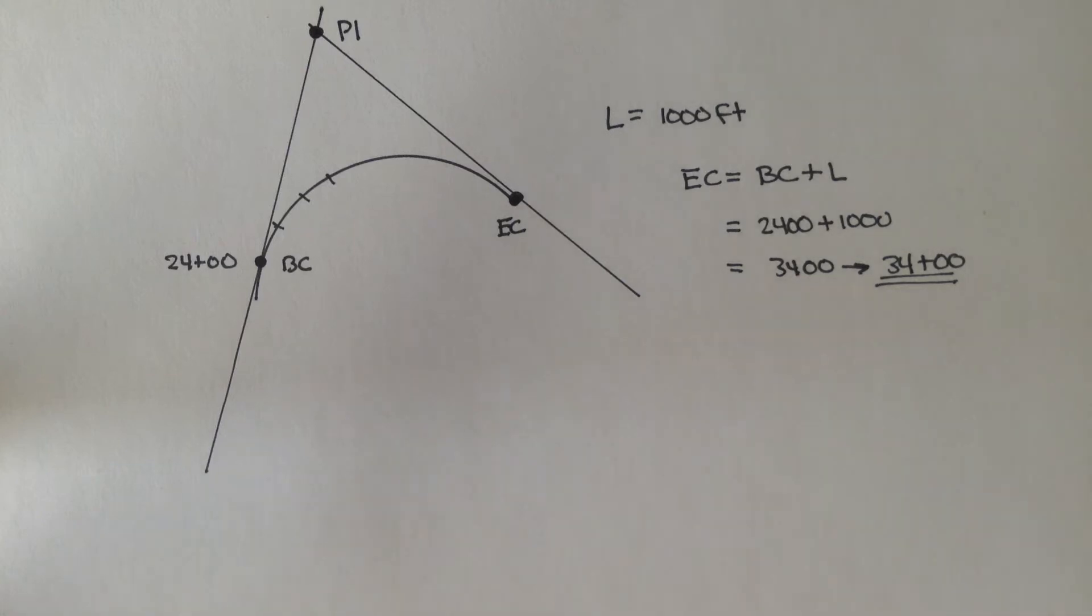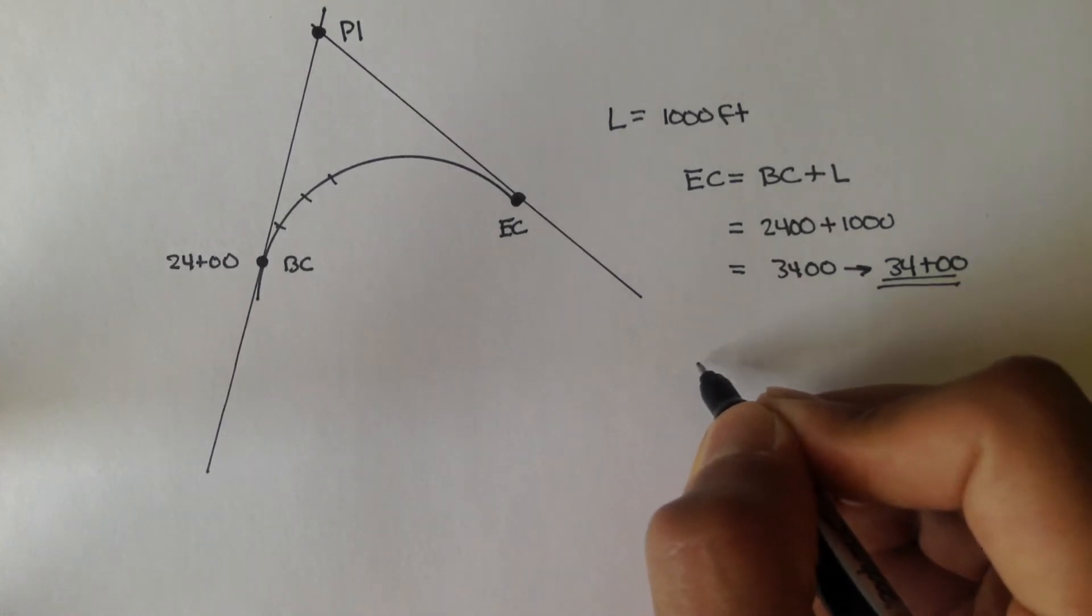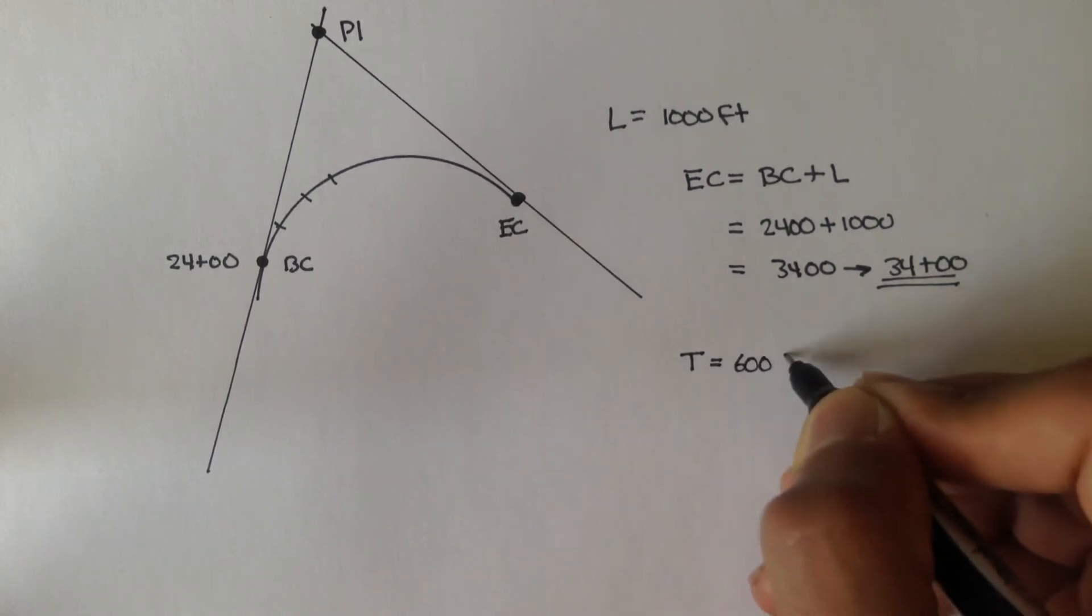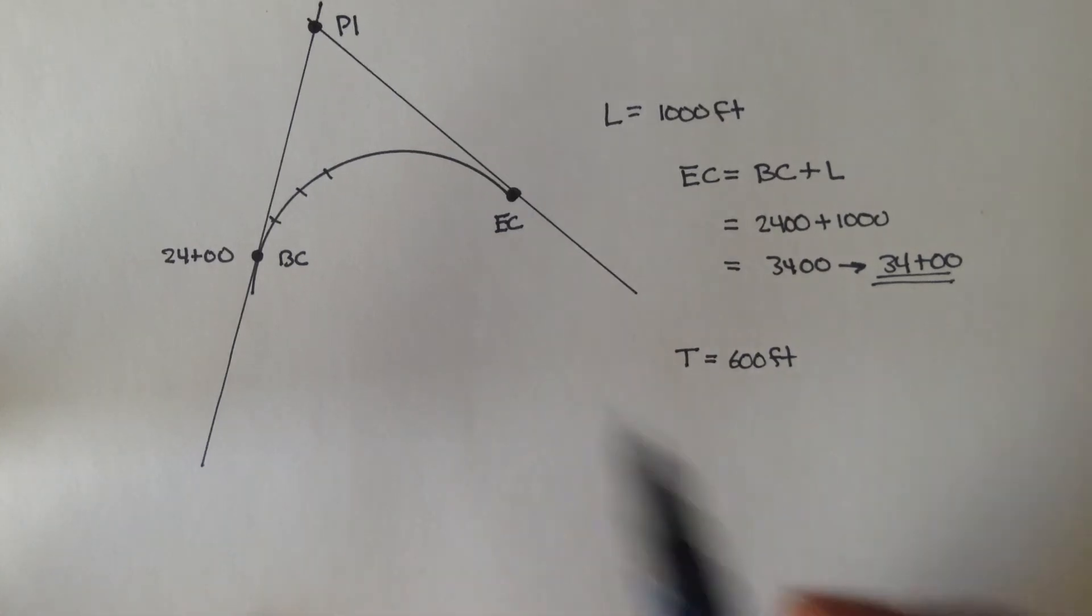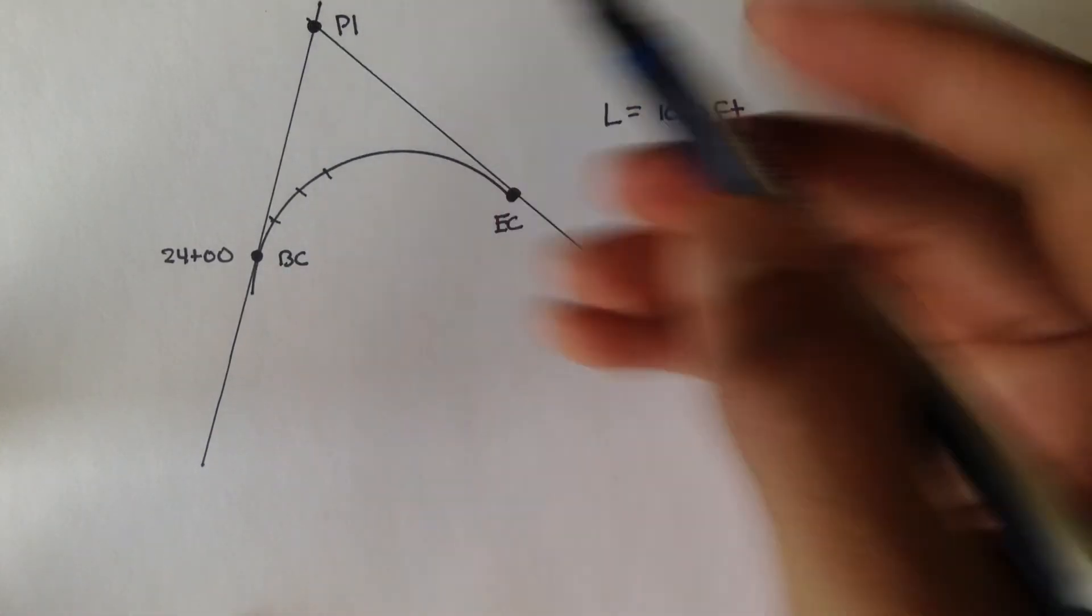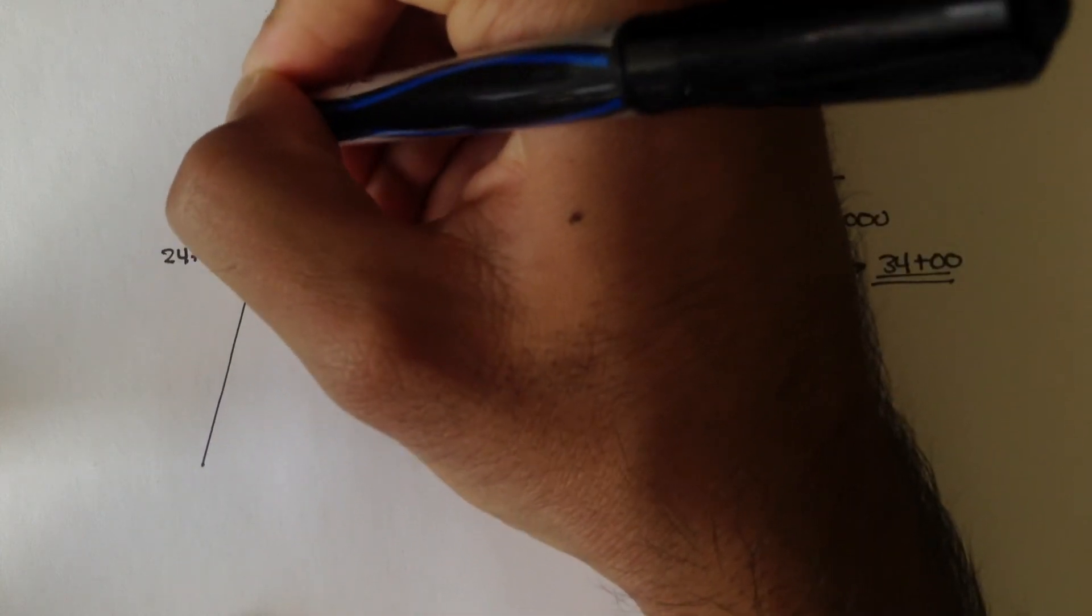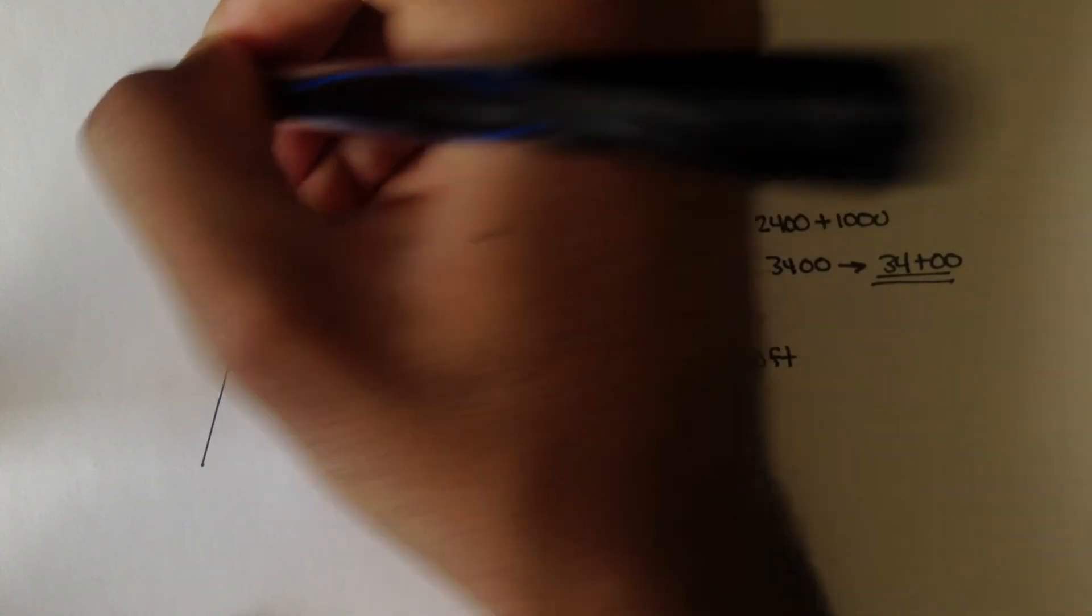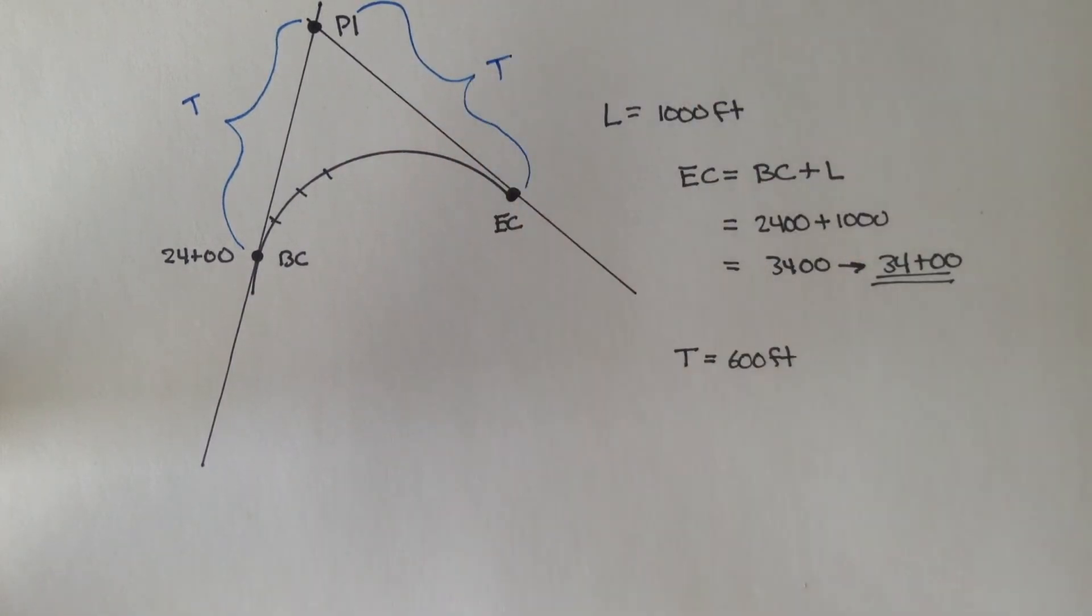Now, what if, let's say they gave us T. T is equal to 600 feet. And remember, T, let me draw this in another color, T was the tangent distance from the BC to the PI, or the EC to the PI, so it's this. This is T, and this is also T.